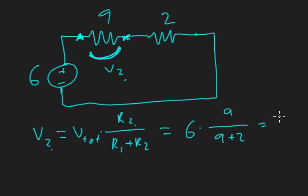That's 6 times 9 over 11. If I put that into a calculator, I get 4.909 volts. That's the amount that's going to be dropped over this resistor.